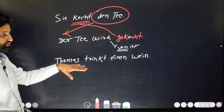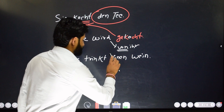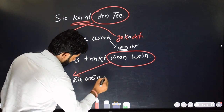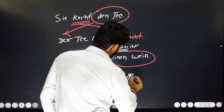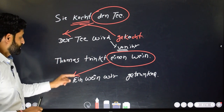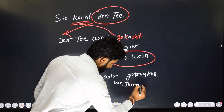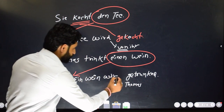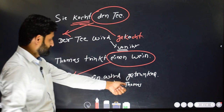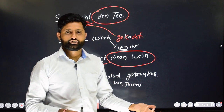'Thomas trinkt einen Wein.' This is the basic sentence. We will take all the examples once again. Thomas trinkt einen Wein — you just need to bring the object here. 'Einen Wein' becomes 'ein Wein.' So: 'Ein Wein wird getrunken.' If you want to mention the name Thomas, then: 'Ein Wein wird von Thomas getrunken.' It's up to you whether you want to mention the name of the person or just make the action more important instead of the subject.